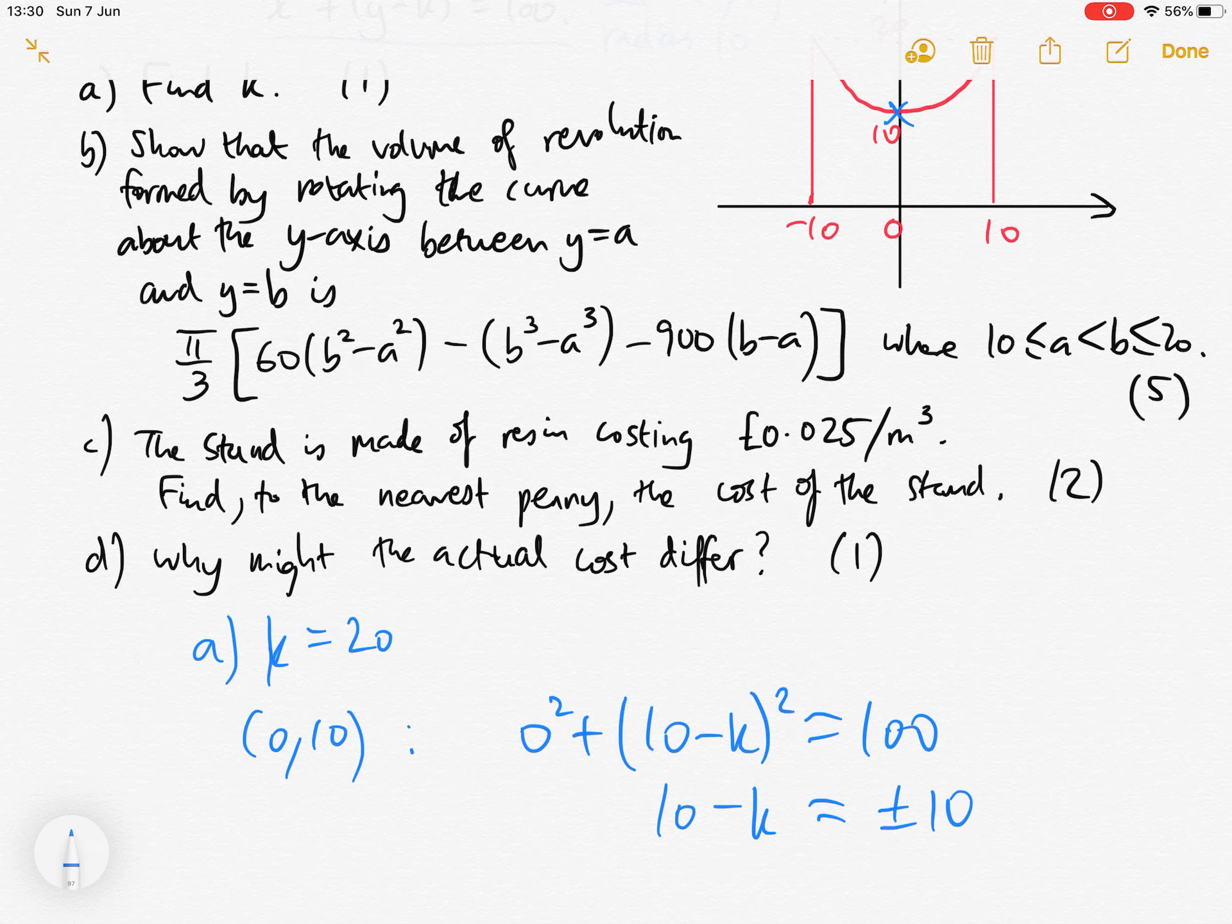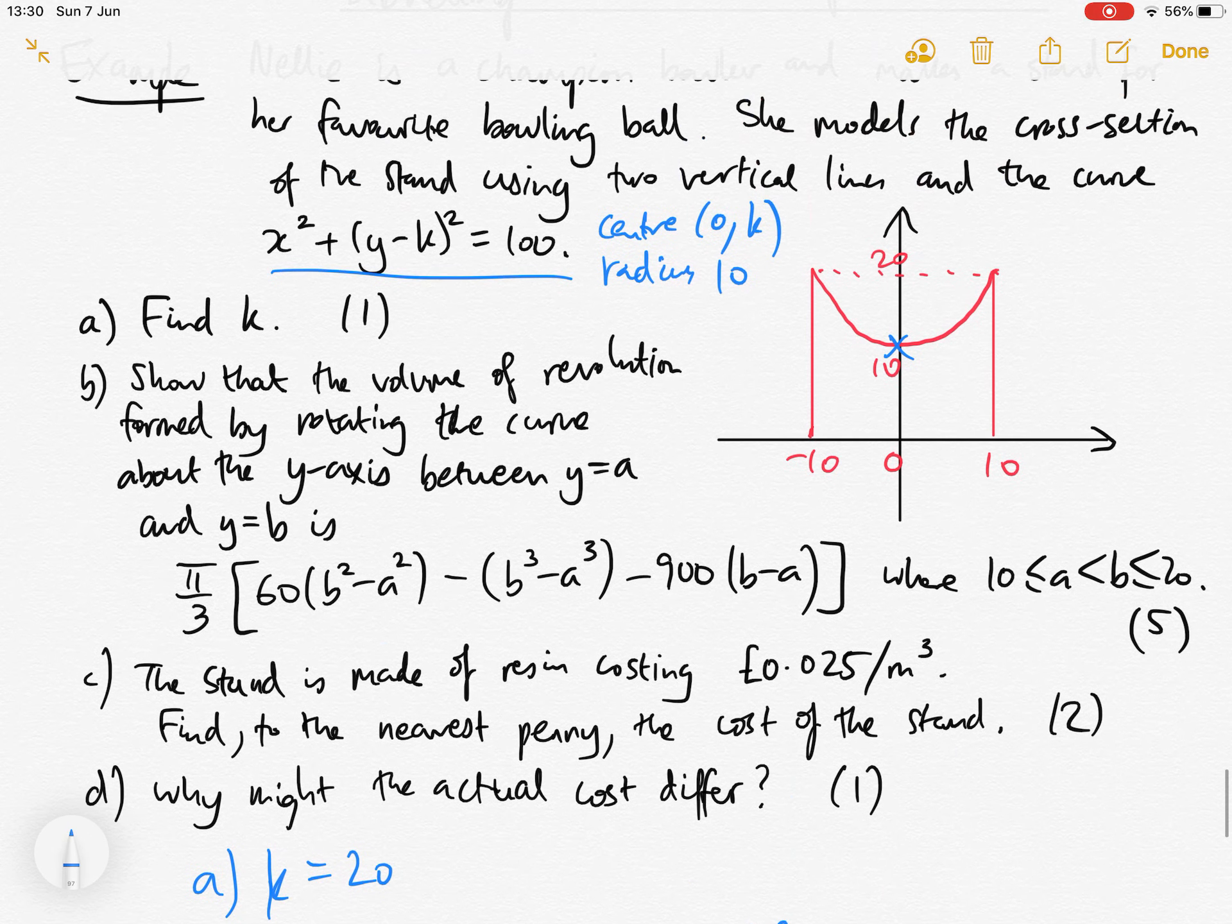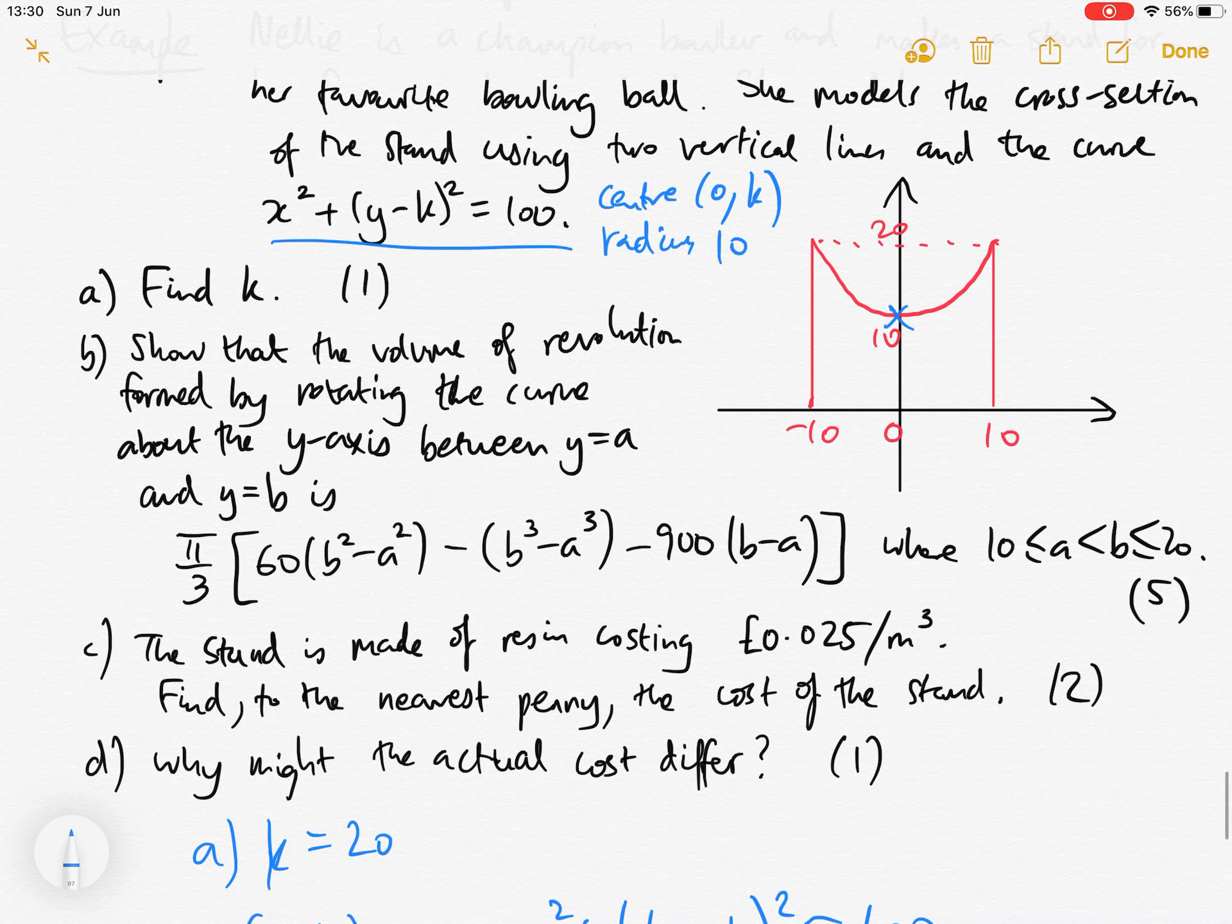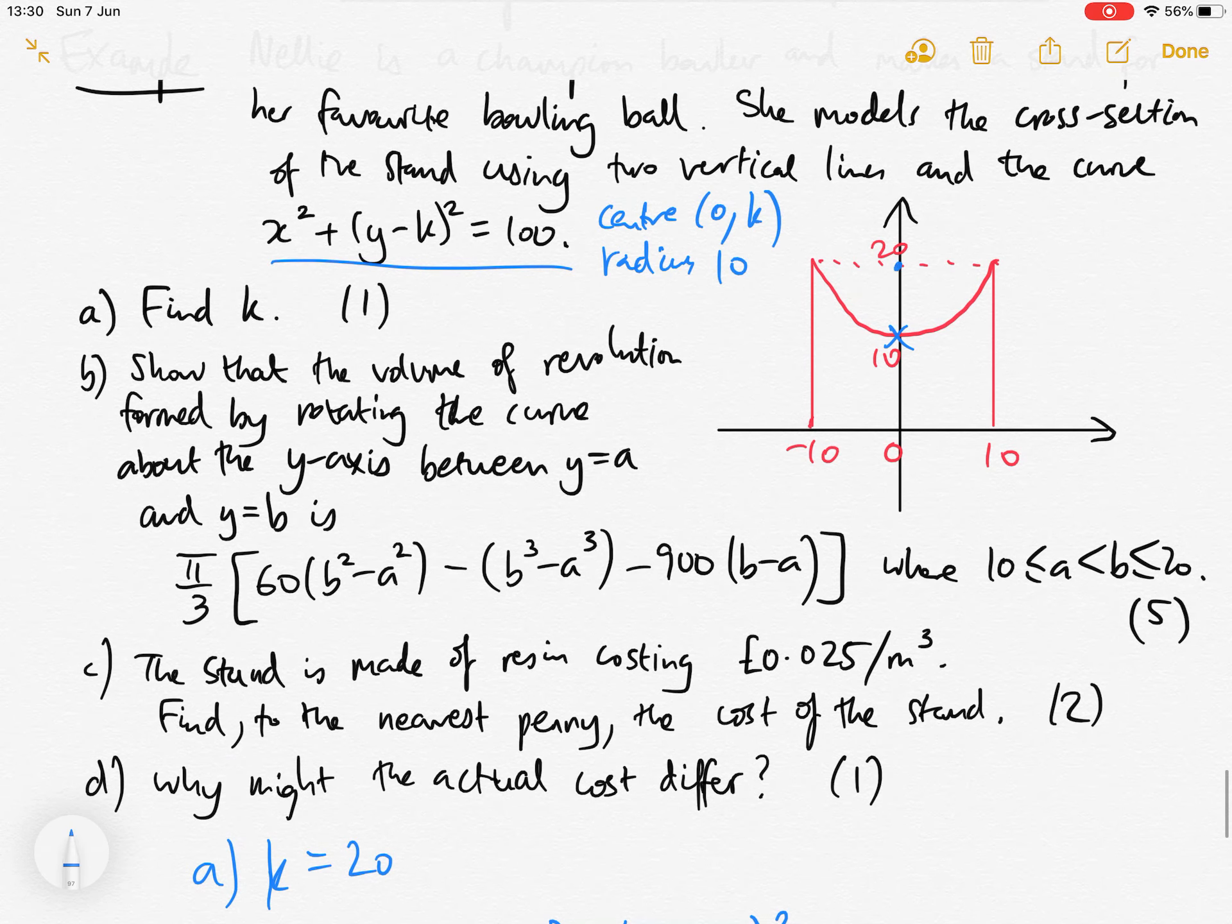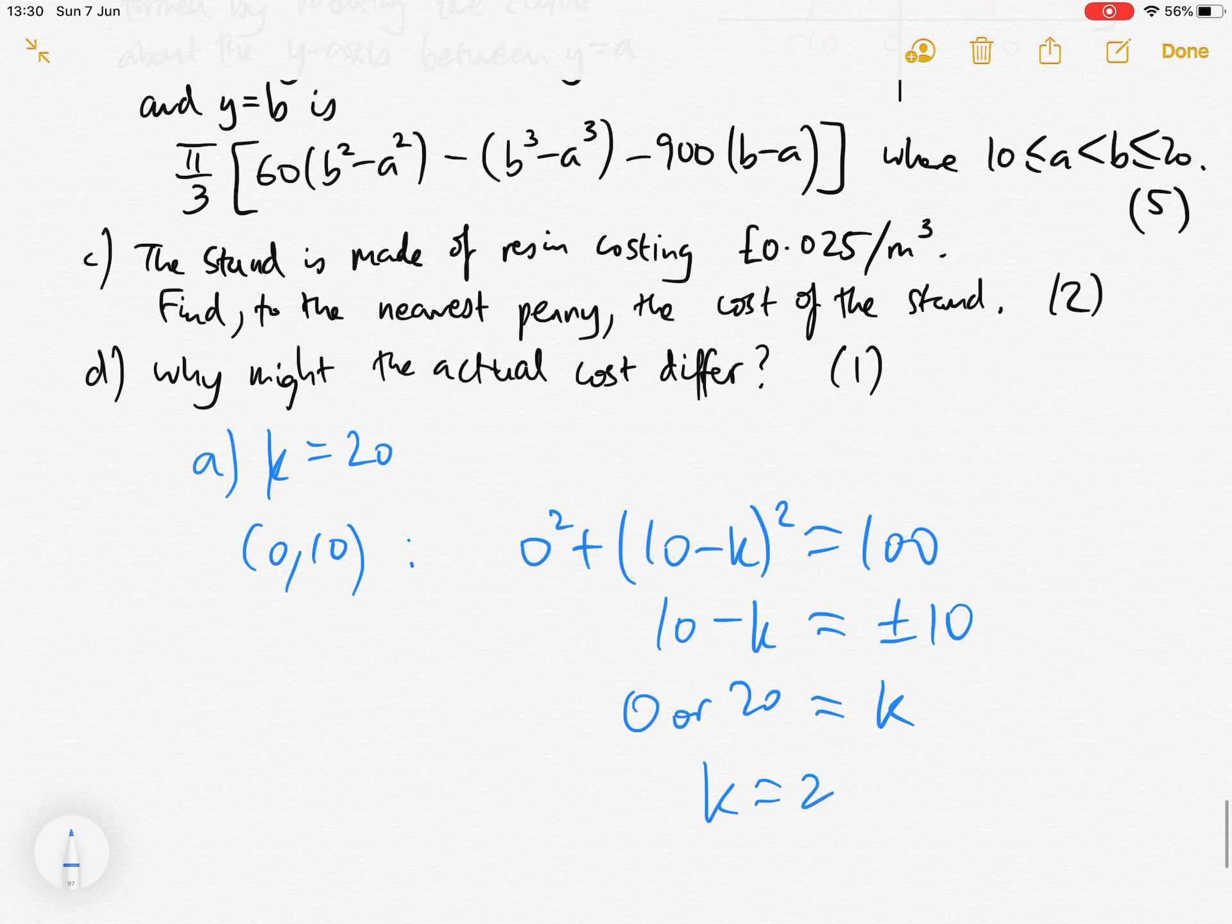Then you can solve this to find k. 10 minus k is plus or minus 10, so k is 0 or 20, but it couldn't be 0 because then the circle would be the other way up. So k is 20.